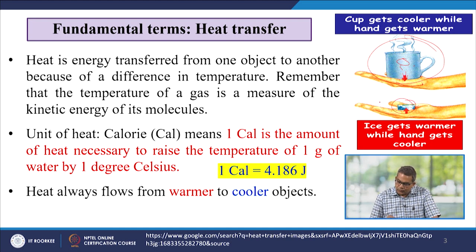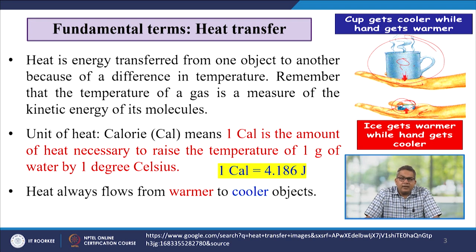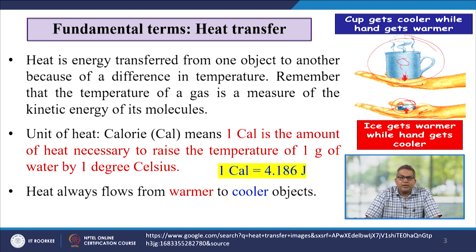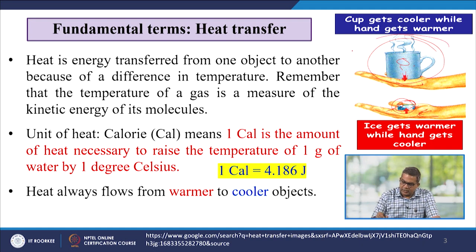Similarly, ice gets warmer while the hand gets cooler, because the hand is warmer than the ice. So, ice extracts heat from your palm — it becomes cooler and the hand gets warmer. In scientific terms, the unit of heat is referred to as a calorie. A calorie is the amount of heat necessary to raise the temperature of 1 gram of water by 1 degree Celsius. Usually, 1 calorie is referred to as 4.186 Joules. Heat always flows from warmer to cooler objects.